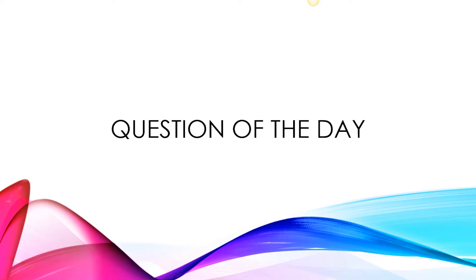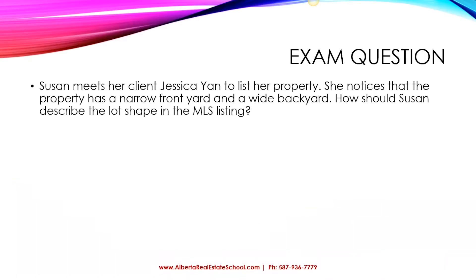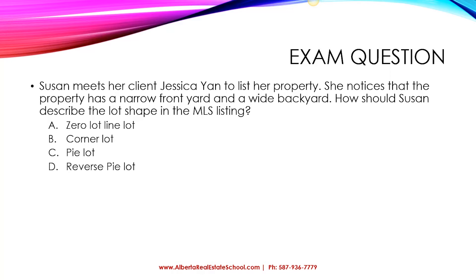Today's practice exam question is: Susan meets her client Jessica Yan to list her property. She notices that the property has a narrow front yard and a wide backyard. How should Susan describe the lot shape in the MLS listing? The options are: A, a zero lot line lot; B, a corner lot; C, pi lot; or D, reverse pi lot.